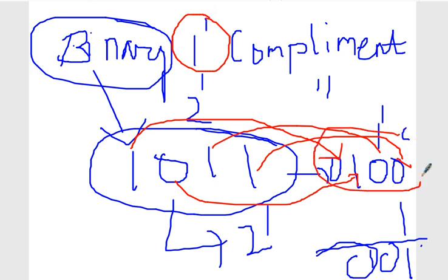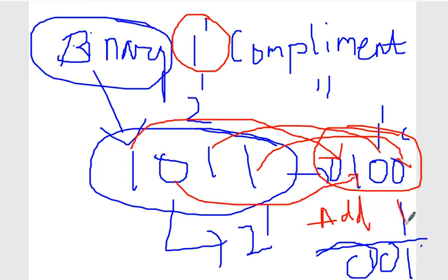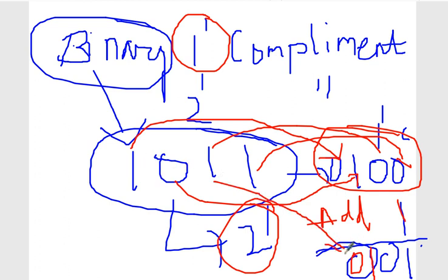This is the one's complement. If you add one to the one's complement, you will get the two's complement. So 0100 plus one gives you 0101. This is the two's complement of the number 1011.